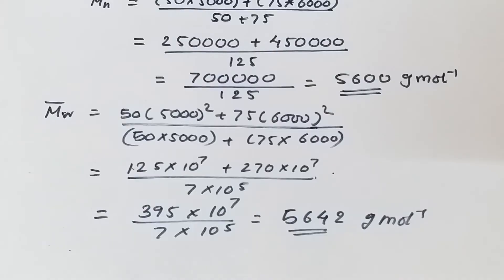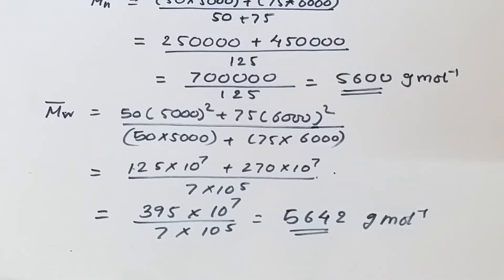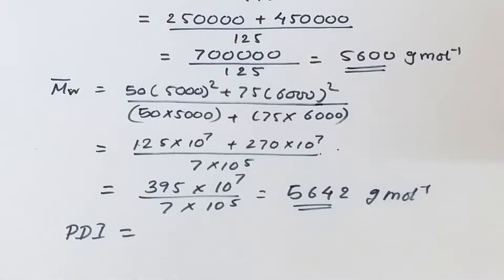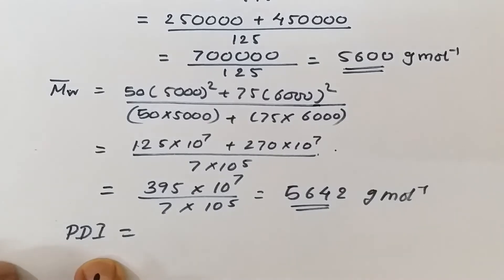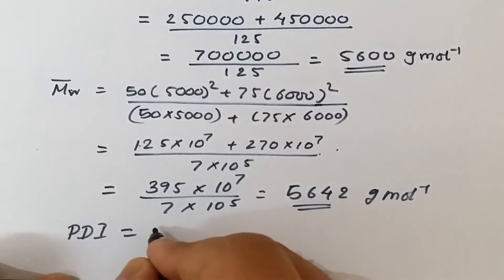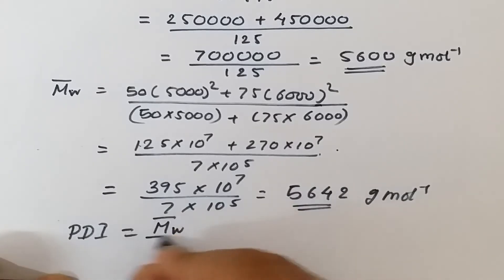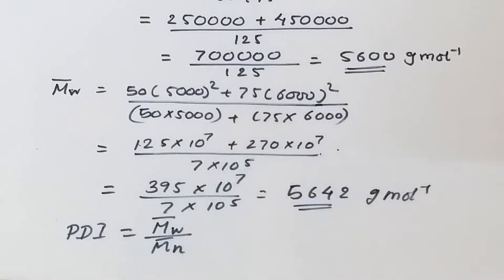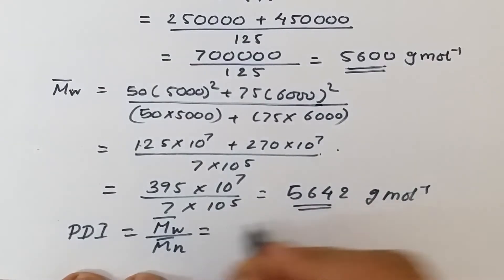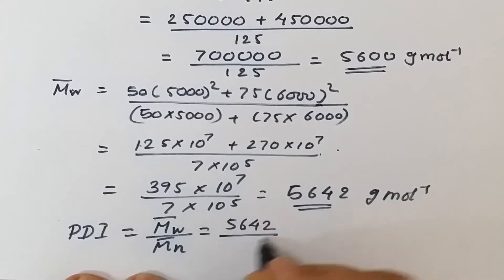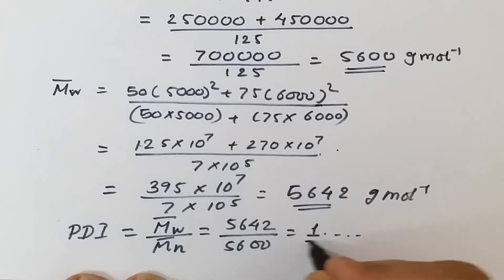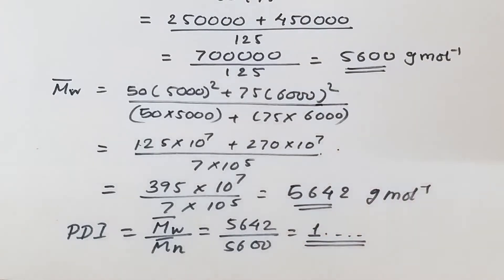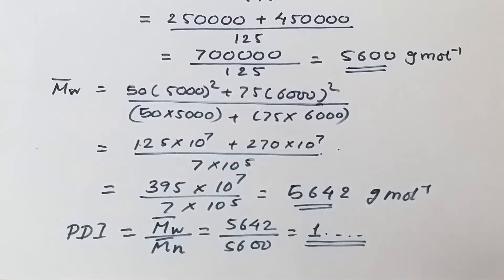If we want to find the polydispersity index, it is the ratio of mass average molecular weight to number average molecular weight: PDI = M̄w / M̄n. We have 5642 divided by 5600, which gives approximately 1.something. This is the polydispersity of the given polymeric solution.